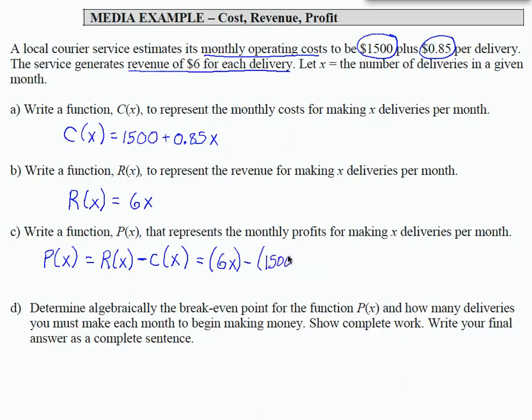Very important that you put these two functions in parentheses. Because what I'm going to have to do is remove the parentheses from revenue, that just becomes 6X. But when I remove the parentheses from the cost function, the negative that is in front will distribute to each of the terms in parentheses. So I obtain negative 1500 minus 0.85X.